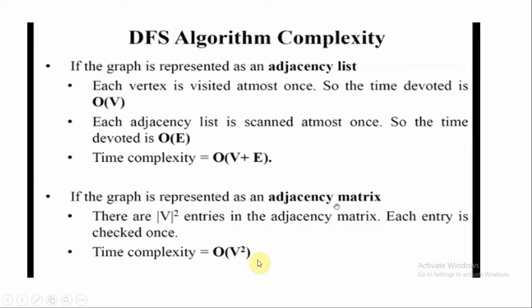What is the complexity of the DFS algorithm? If the graph is represented as an adjacency list — as discussed in the previous video on graph traversal — each vertex is visited at most once, so the time devoted to vertices is O(V). After that, you scan the whole adjacency list, which takes O(E). So the total time complexity is O(V + E).